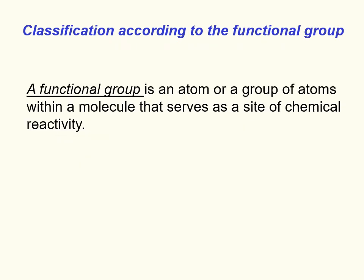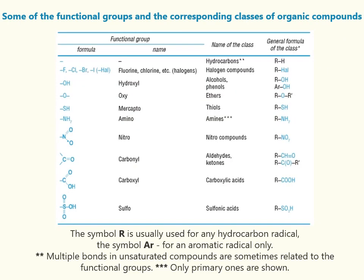All organic compounds are grouped into classes based on characteristic features called functional groups. A functional group is an atom or a group of atoms within a molecule that serves as a site of chemical reactivity. Some of the functional groups and the corresponding classes of organic compounds are presented in this table.